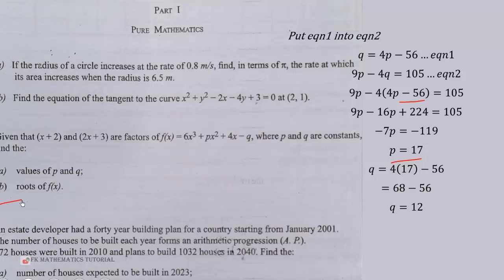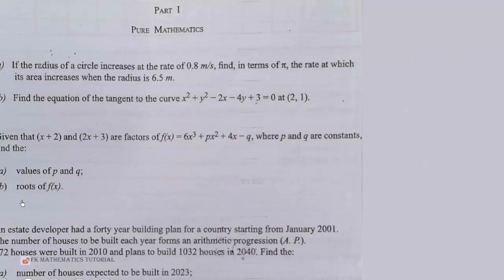So let's look at the B part of the question. It says that we have to find the roots of f(x). So f(x) is now equal to 6x cubed plus 17x squared plus 4x minus 12. Now we found two roots already: x equals negative 2, x equals negative 3 over 2. To get the third root, what we have to do is to factor this completely. So what do we do? We can use long division.